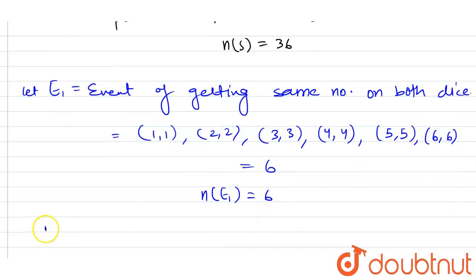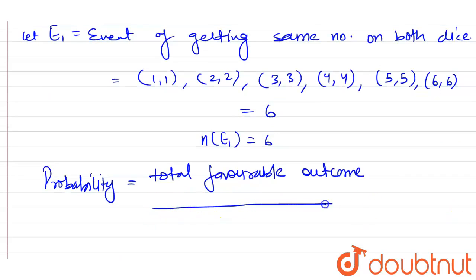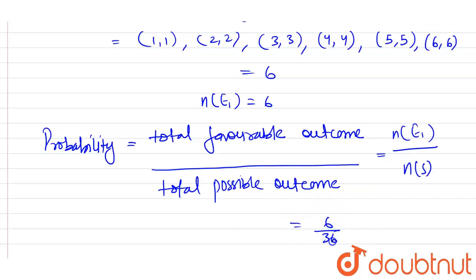So we know that probability equals total favorable outcome divided by total possible outcome. Here, this equals n(E1) divided by n(S). So this equals 6 by 36 or 1 by 6. So the probability of getting the same number on both dice is 1 by 6.